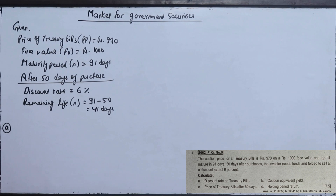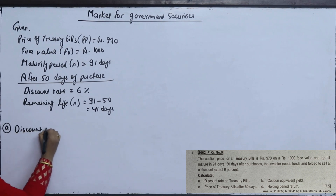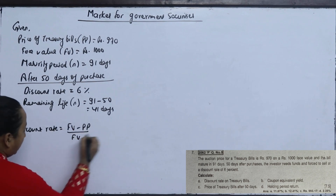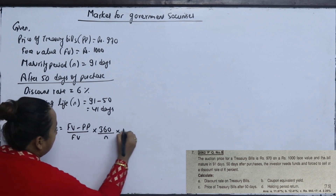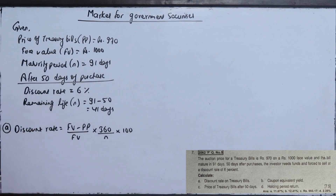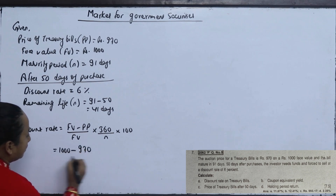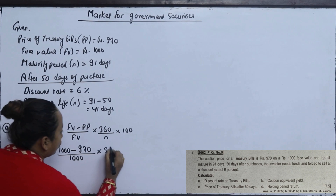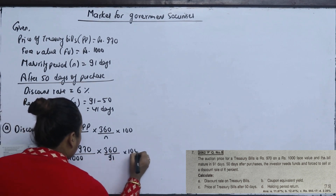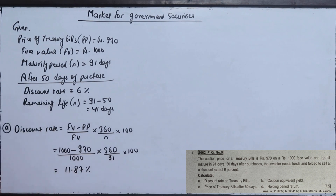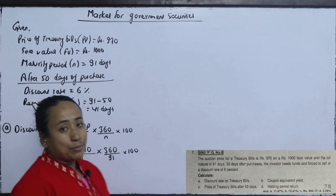Using the formula: discount rate = (FB − PP) / FB × (360 / n) × 100, with FB = 1,000, PP = 970, and n = 91 days, the discount rate works out to 11.87% annually.